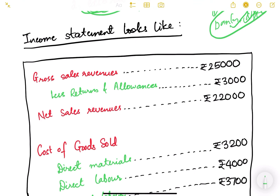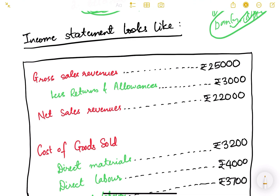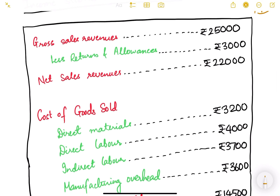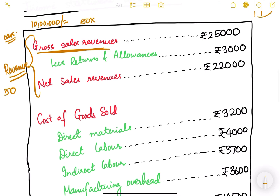Now let's look at how an income statement looks. Unlike the balance sheet which has two parts - assets and liabilities - the income statement is just a single statement. It starts with sales revenue. Gross sales revenue: for example, if you have a business selling cars and one car costs 10 lakh rupees, and in a year you sell 50 cars, your total gross revenue is 50 multiplied by 10 lakh, which equals 5 crore rupees.